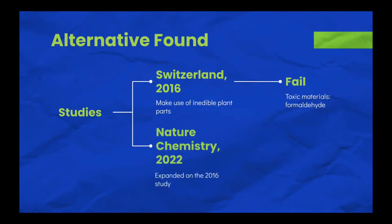This study still proved to be helpful as a new 2022 study published by Nature Chemistry expanded on that research to find a more suitable alternative. Instead of using formaldehyde because of its toxic effects, they used an alternative called glyoxylic acid because they realized it was a safe compound able to convert even more of the plant waste into plastic than the formaldehyde previously used.